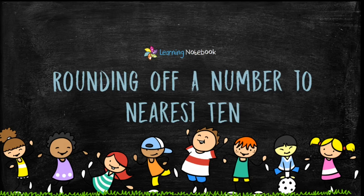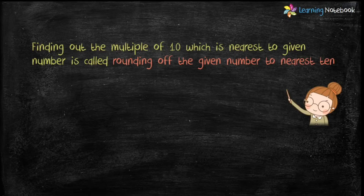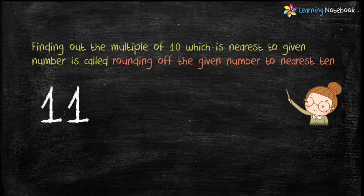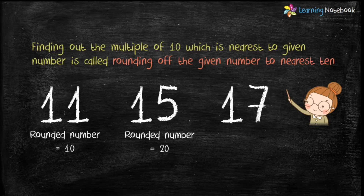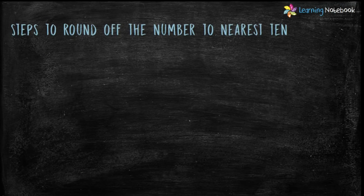Let's start and first understand rounding off a number to the nearest ten. Finding out the multiple of ten which is nearest to a given number is called rounding off the given number to the nearest ten. For example, by rounding off 11 to the nearest ten we get 10, by rounding off 15 we get 20, and by rounding off 17 we again get 20.